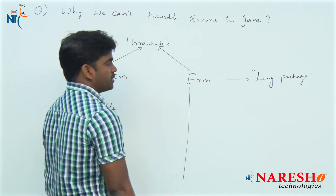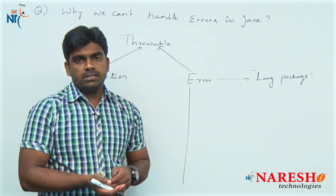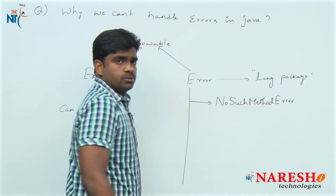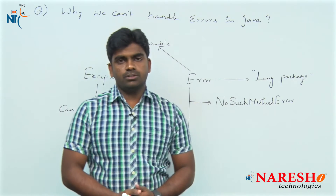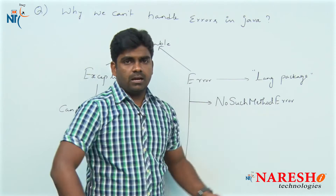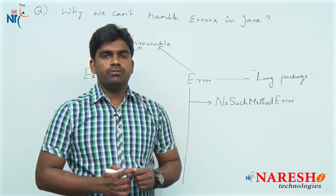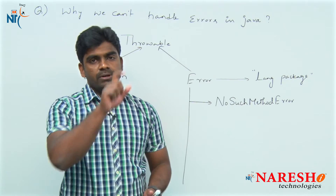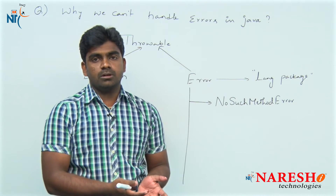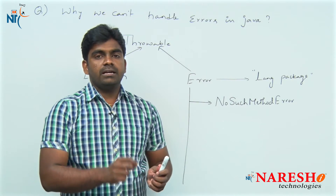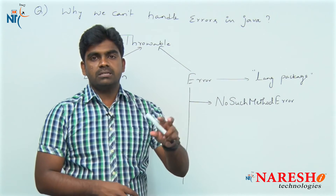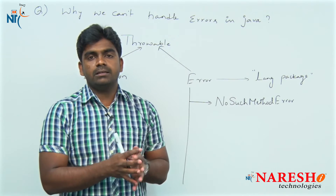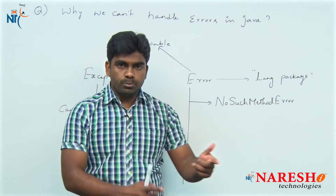Some of the errors you can see: suppose if the main method is not present in the application, it will give one error called NoSuchMethodError. Exceptions and errors are classes, so every word starts with a capital letter following the naming convention of a class. In JDK 1.8 they have given a clear message — if the main method is missing, it clearly says please write the main method as: public static void main(String[] args). But in early versions up to JDK 1.6, it would give that NoSuchMethodError.